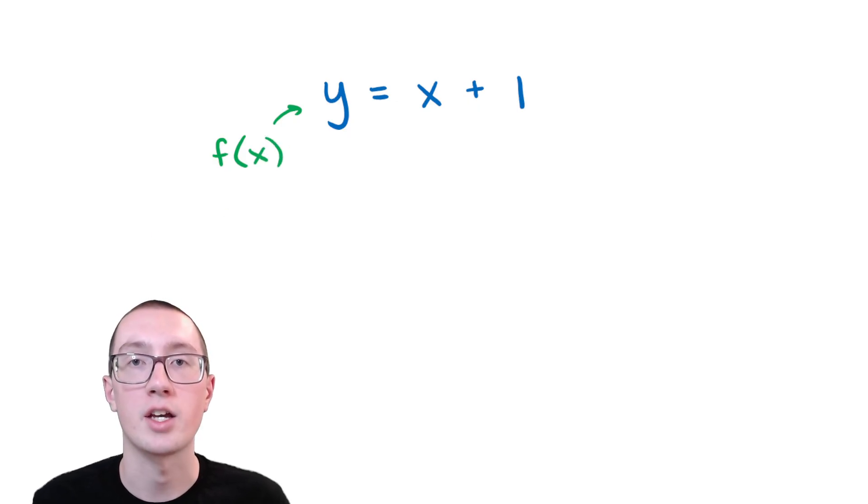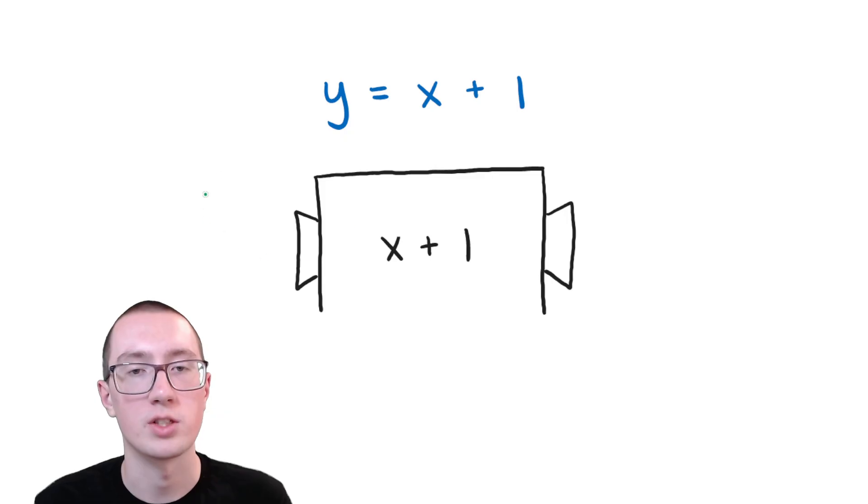The way I like to think about functions is like a machine. So basically how this works is we're going to put in numbers on the left side of the machine, and then the machine is going to do some stuff to it, and then it's going to give us out a number on the right side. And we use the letter x to show the numbers that we're putting inside, and then we use the letter y for the numbers that we're getting out.